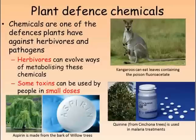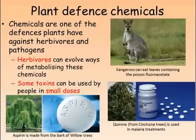Plants can also produce chemicals to defend themselves against pathogens such as fungi. Some of these chemicals are also poisonous to humans, but they can sometimes have useful effects when used in small amounts. For example, quinine is used to treat malaria and aspirin is used to relieve pain and fever. In the future, more of these poisonous chemicals are likely to be put to use in treatments for diseases such as cancer.